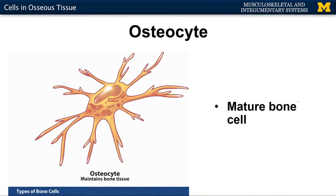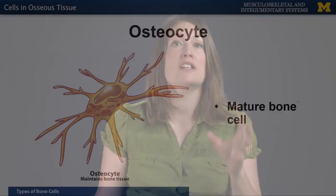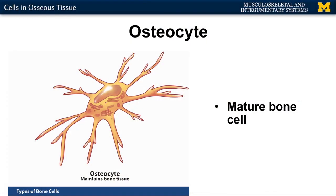Osteoblasts secrete the extracellular matrix, keep surrounding themselves with their own secretions, and eventually lock themselves in. This leads to the creation of an osteocyte — the main or mature bone cell. Once there's no more secretion of extracellular matrix, that's when osteocytes develop.